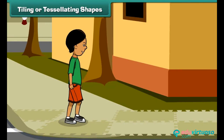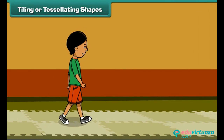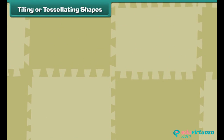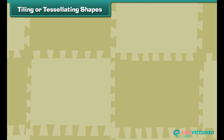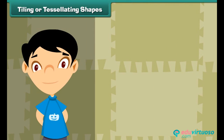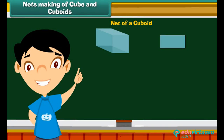Tiling or tessellating shapes: Rajini is on her way to the pharmacy and notices tiles of irregular shapes on the pavement. She observes that the tiles have been fitted together without any gaps between them, and they do not overlap. The tiles form a tessellation. A tessellation is a two-dimensional figure created through the repeated use of a geometric shape such that there are no gaps or overlaps.